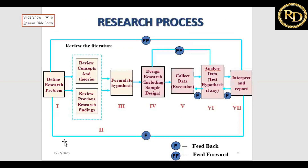The research process begins with defining the research problem, reviewing concepts, theories, and research findings. Then formulate your hypothesis — whatever statistical answers you expect. After that, design the research including sample designs, collect the data, analyze the hypothesis you formulated, and finally go for interpretation and report writing.